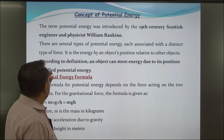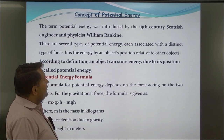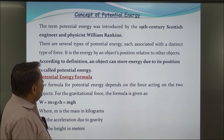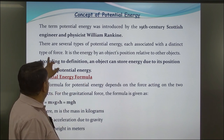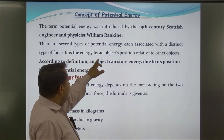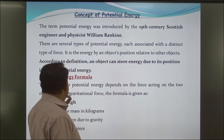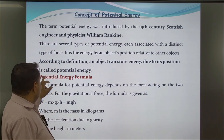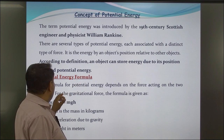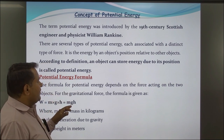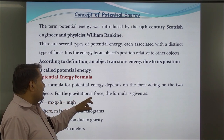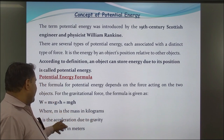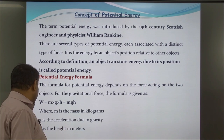Concept of Potential Energy: The term potential energy was introduced by the 19th century Scottish engineer William Rankine. There are several types of potential energy, each associated with a distinct type of force. It is the energy of an object's position relative to other objects. An object can store energy due to its position; it is called potential energy. The formula of potential energy depends on the force acting on the two objects. For the gravitational force, the formula is given as W = mgh, where m is the mass in kilogram, g is the acceleration due to gravity, and h is the height in meters.